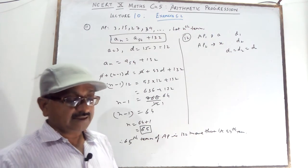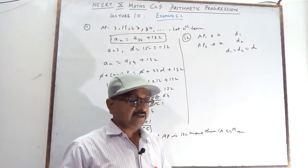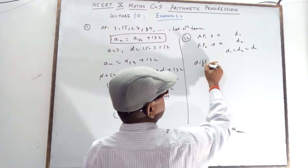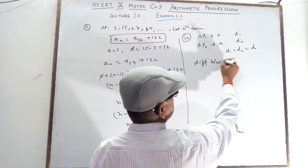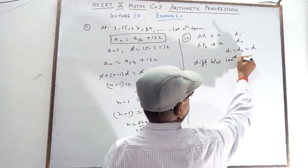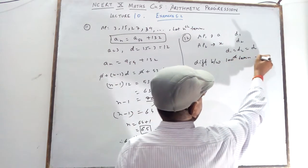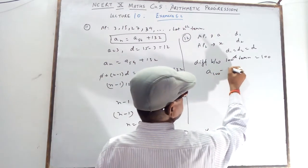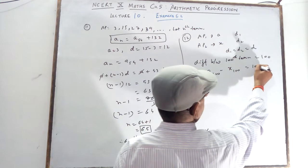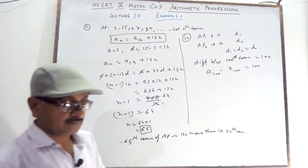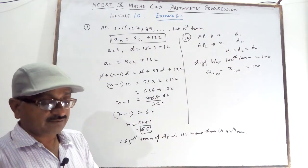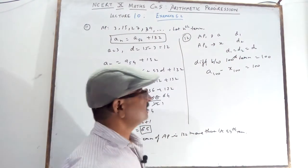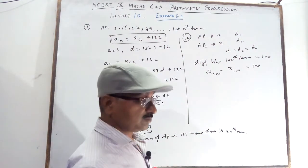The difference between their 100th terms is given as 100. That means A100 minus X100 equals 100. You want to find the difference between their 1000th terms.